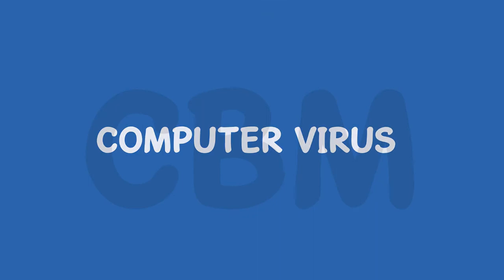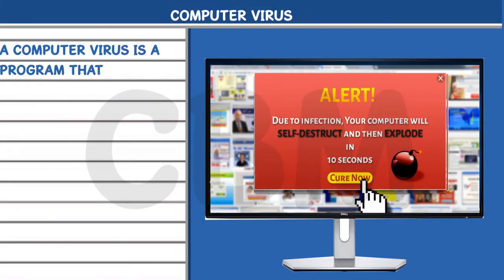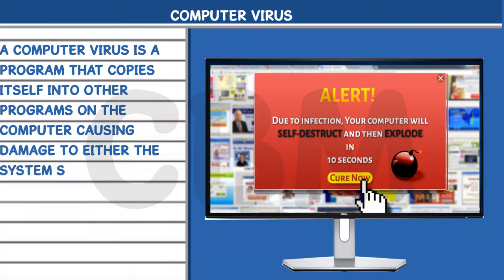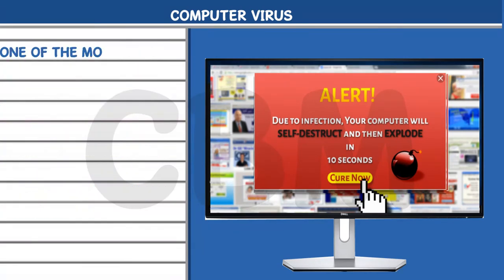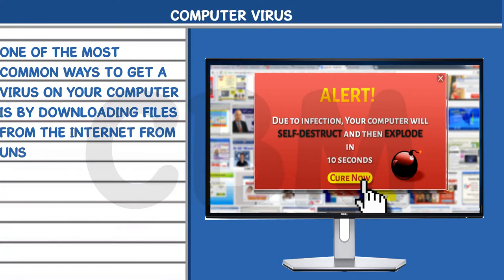Computer Virus: A computer virus is a program that copies itself into other programs on the computer, causing damage to either the system software, hardware, or personal information. One of the most common ways to get a virus on your computer is by downloading files from the Internet from unsafe websites, which contain virus-like malware.